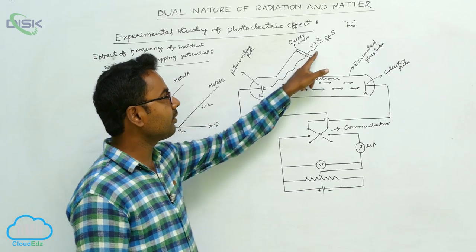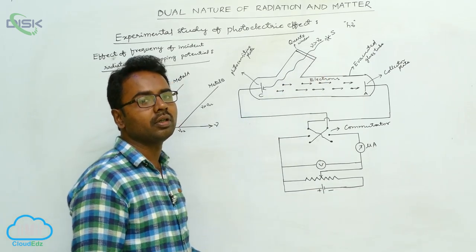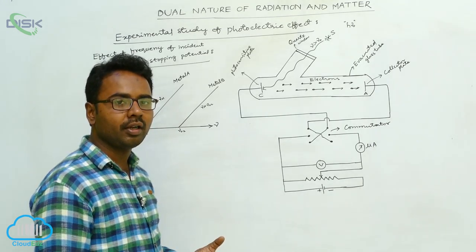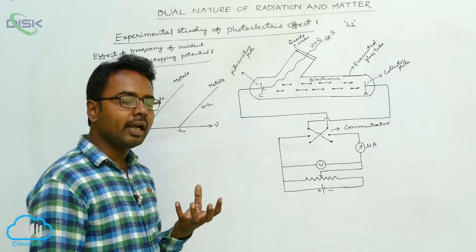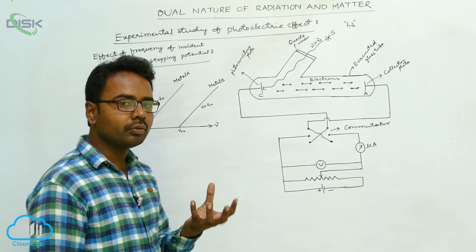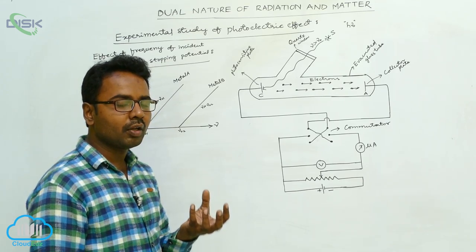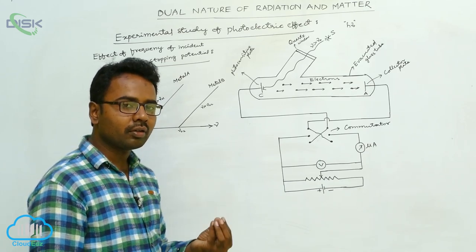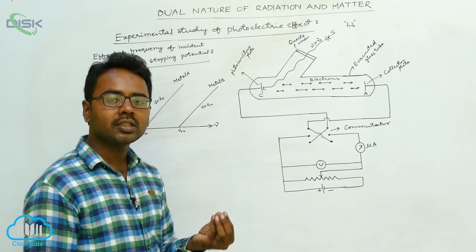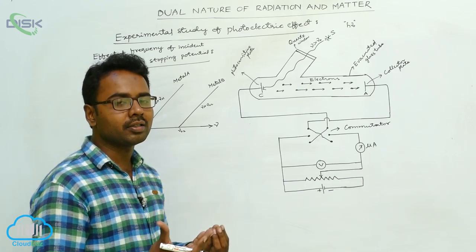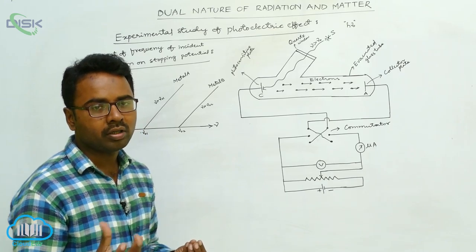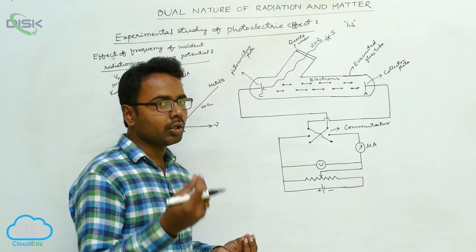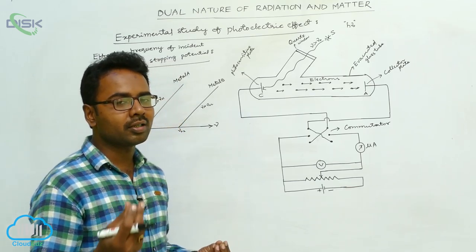As we increase the frequency of incident radiation, the kinetic energy of electrons also increases. This is because as frequency increases, the energy of the photon increases. Out of the total energy of the photon, a certain amount of energy — called the work function — is required just to detach the electron from the metal surface. The remaining energy is given to the electron as maximum kinetic energy.